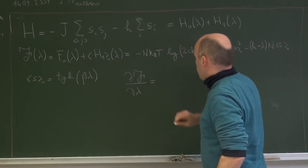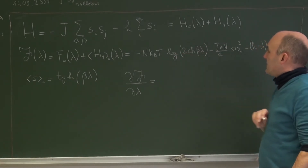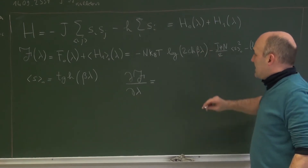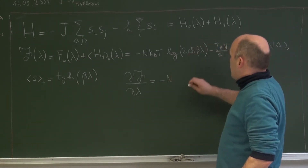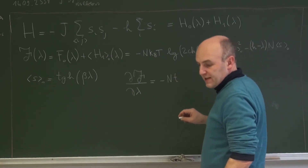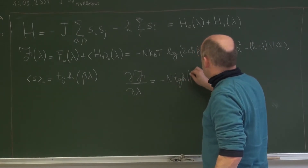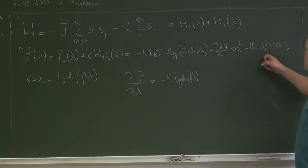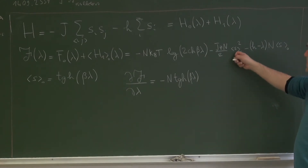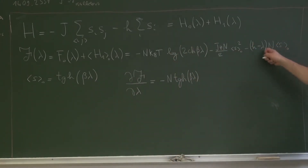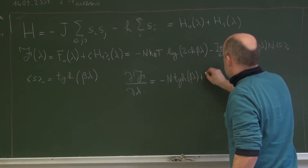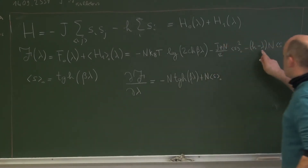I skip a few steps. The first term we have to differentiate with respect to λ, and we will see that this derivative is actually giving minus N. This is the hyperbolic tangent of β times λ. Now I have to differentiate with respect to λ also this part. Do not forget that our S₀, this average, depends on λ. So I have to differentiate here, here, and also λ here. So let's first do the simplest differentiation. This is plus λ N S₀, which gives plus N S₀. This is differentiated with respect to λ.